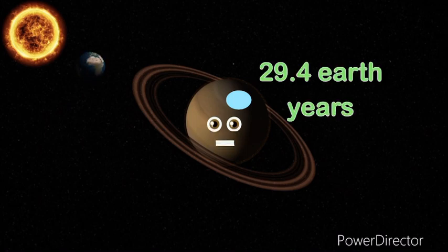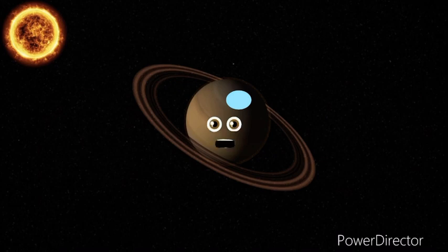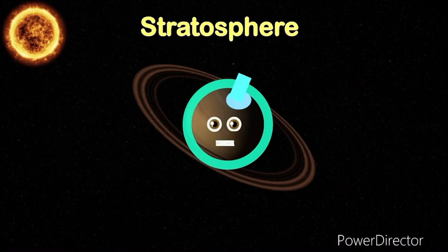When the storm does erupt, it shoots waves up into the stratosphere of Saturn, making it misbehave.